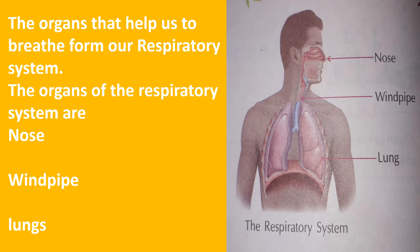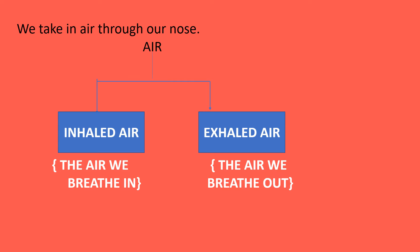The organs of the respiratory system are: the first one is nose, the second is windpipe, and the third one is lungs. Now let us see how these different parts help us to respire.